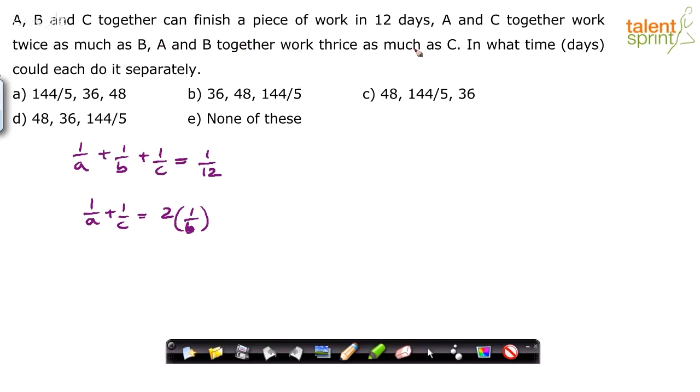And A and B together work thrice as much as C. A and B together work, so 1/A + 1/B = 3 times C, 3 times of 1/C.